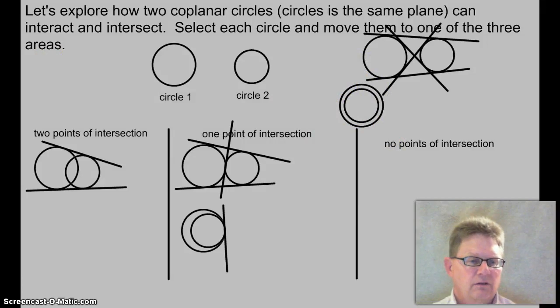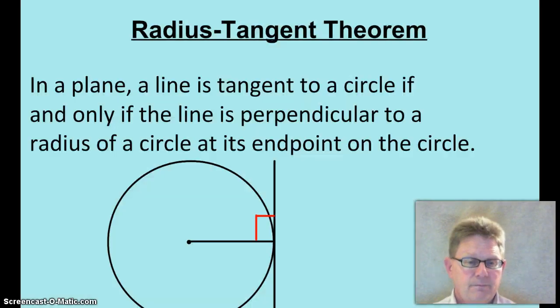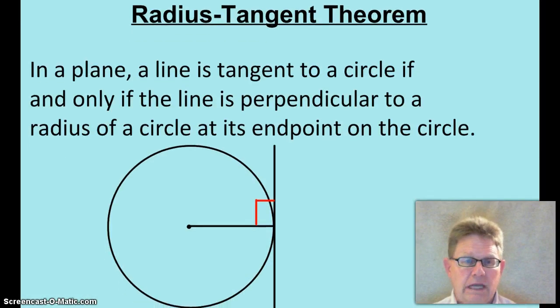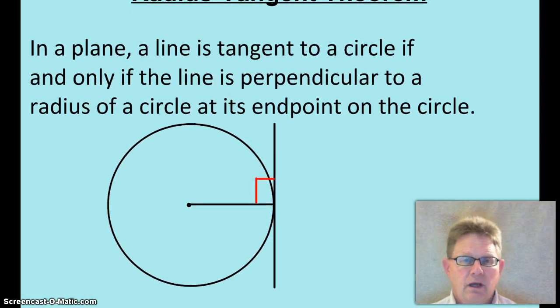Let's learn a couple. Now we've learned a bunch of definitions. Let's learn a couple of theorems. The radius tangent theorem. In a plane, a line is tangent to a circle if and only if the line is perpendicular to the radius of the circle at its end point on the circle.